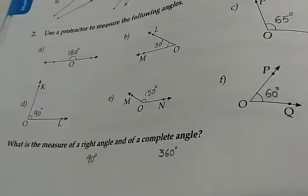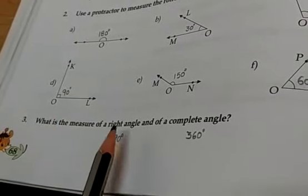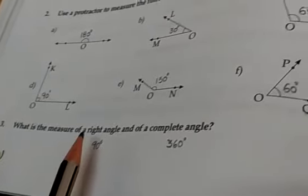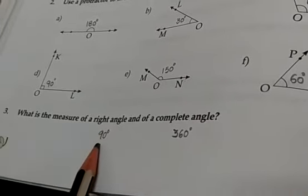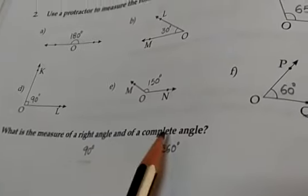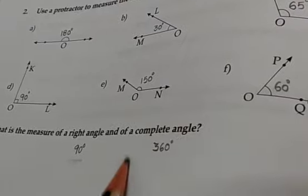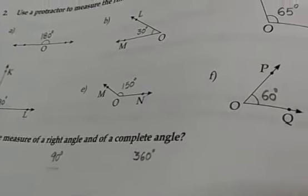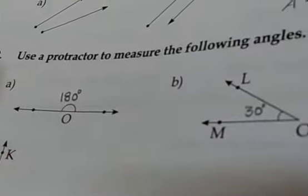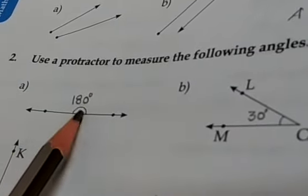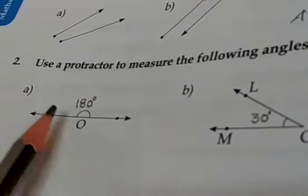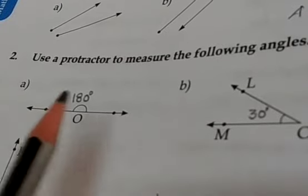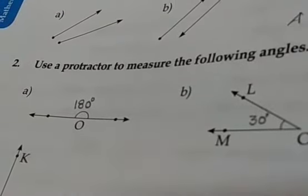Third question: what is the measure of a right angle? As I have explained earlier, it is 90 degrees. And the complete angle is 360 degrees. So in exercise 2, this measures 180 degrees, so it is a straight angle. No need to write which angle it is — just do the measurement. That is enough, students.